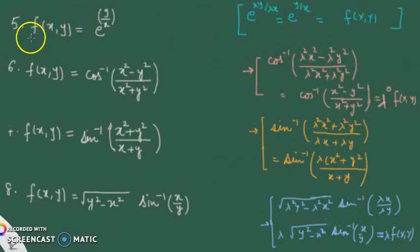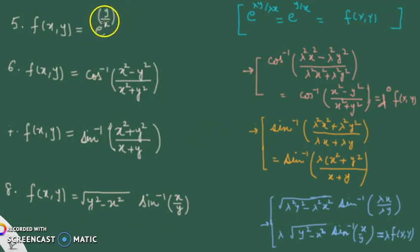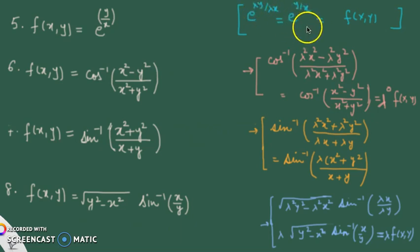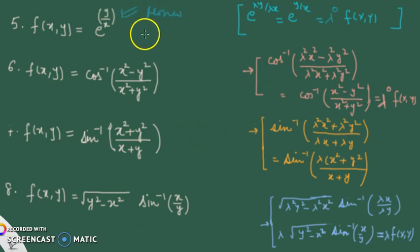Example 5 is again an exponential, but unlike the previous case where the exponent was x²+y², here I have the rational expression y/x. In y/x, y has degree one and x also has degree one. Applying the lambda substitution, lambda cancels — e^(y/x) comes back, and since there is no lambda outside, we write λ⁰. So yes, it is a homogeneous function of degree zero.